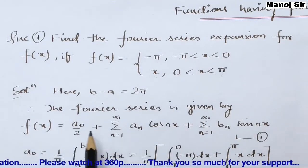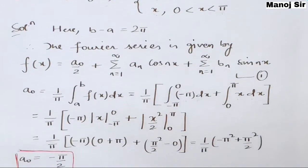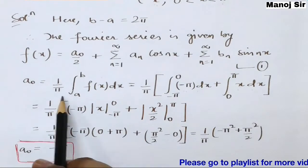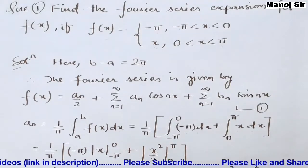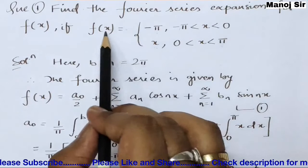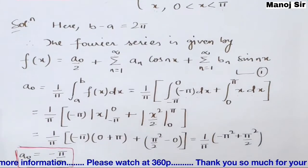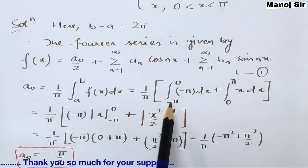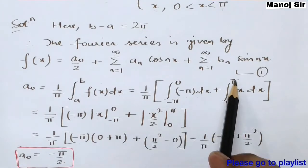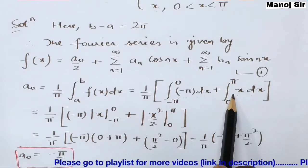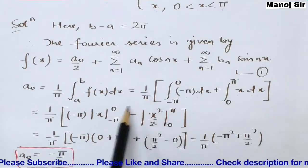First, find a₀: a₀ = (1/π) ∫_a^b f(x) dx. Since the function is piecewise, we split: a₀ = (1/π) [∫_{-π}^{0} (-π) dx + ∫_{0}^{π} x dx].